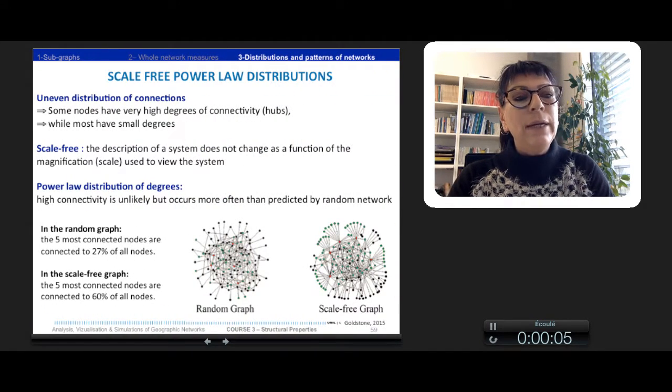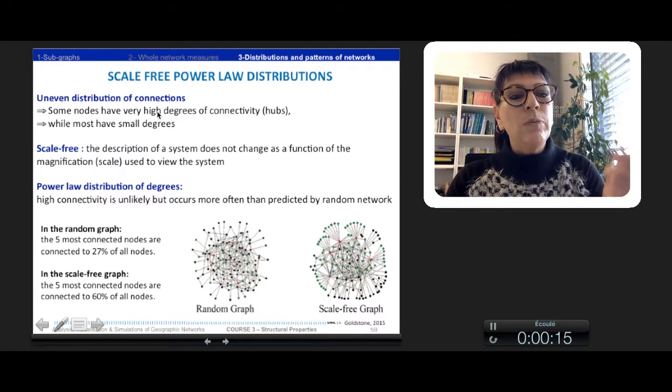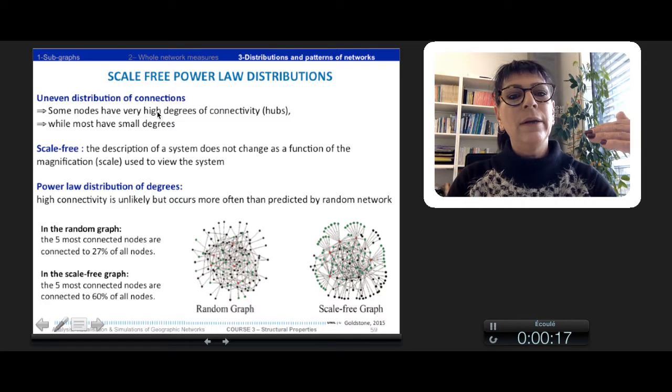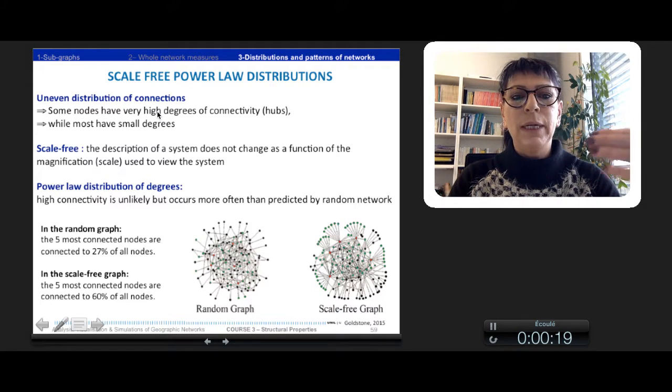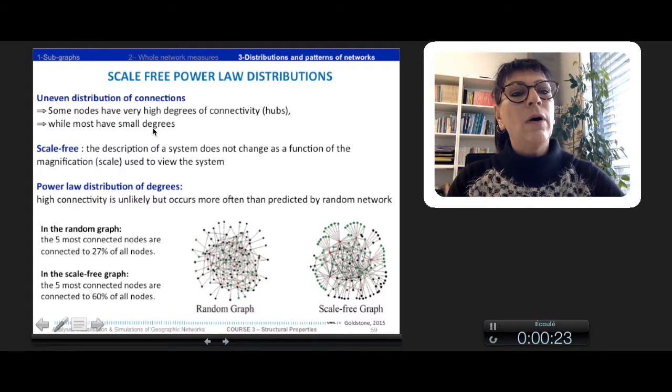The scale-free network, which is also a power-law distribution, describes an uneven distribution of connections. Some nodes have very high degree of connectivity, we can call them hubs, while most of the nodes have very small degree, very small connectivity.